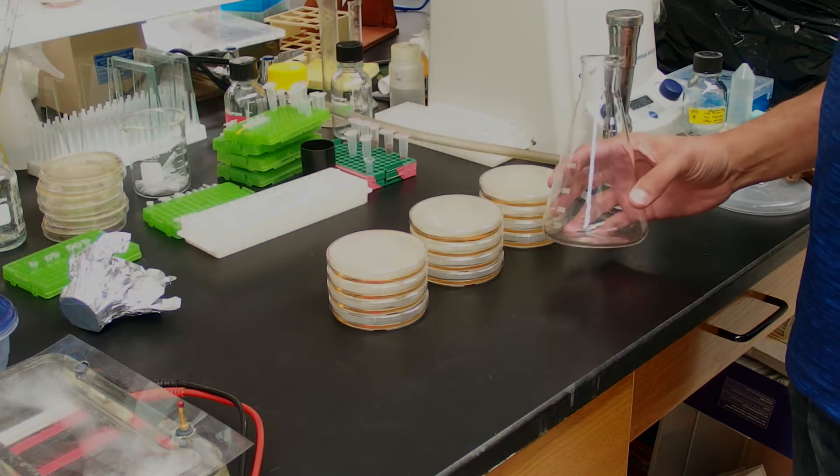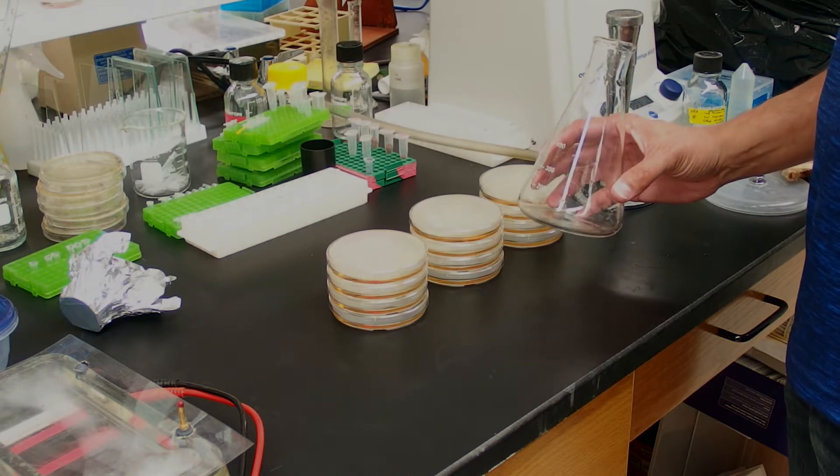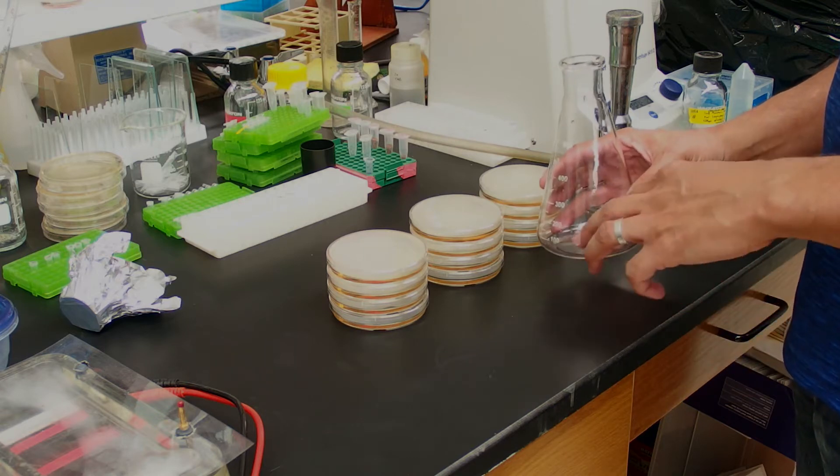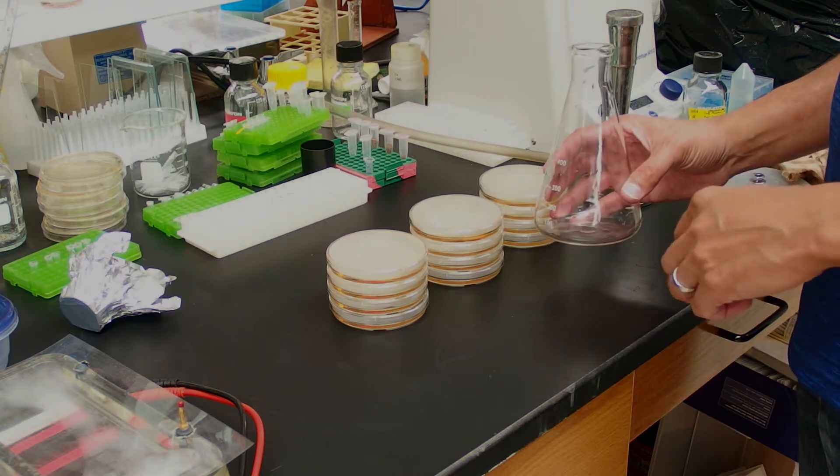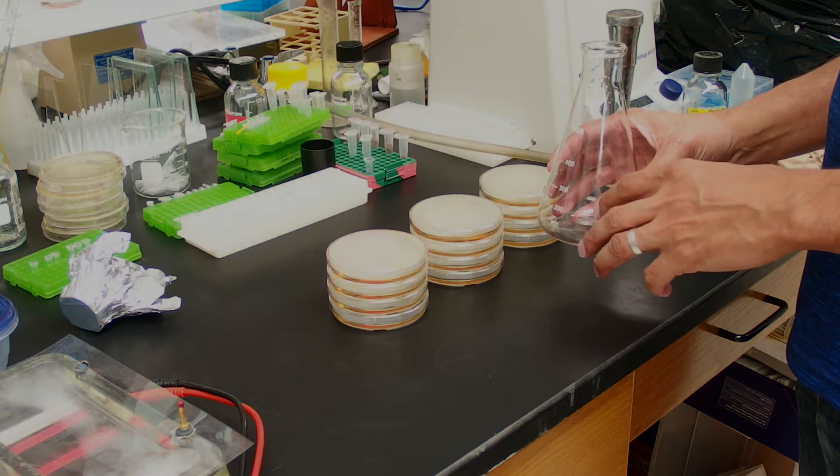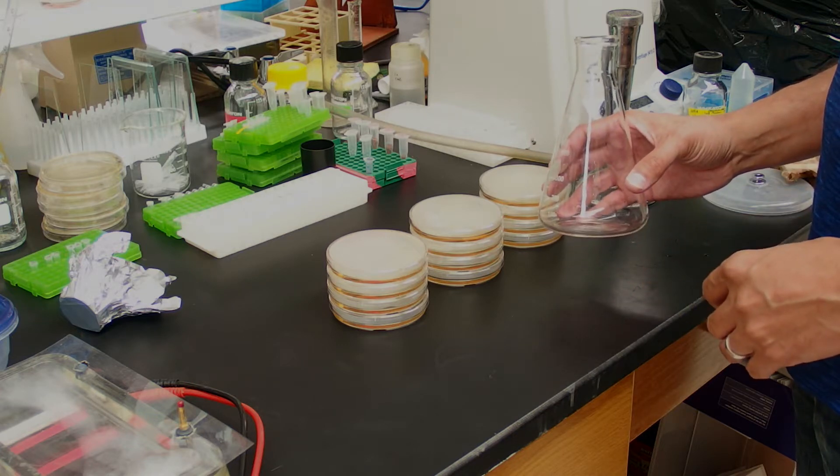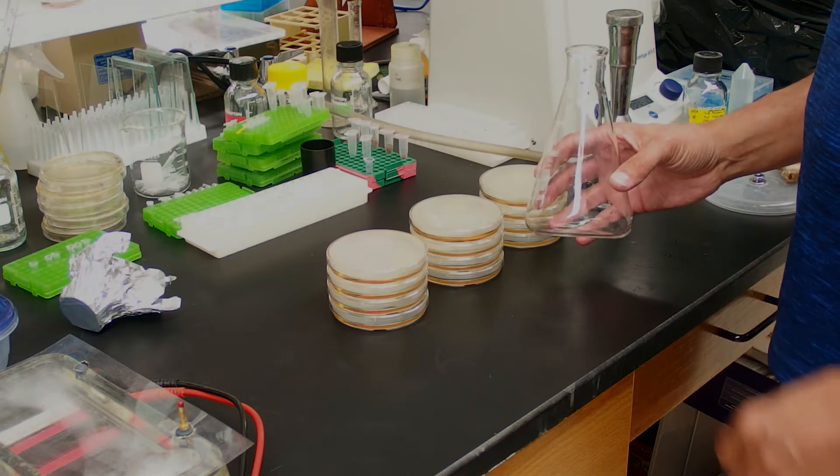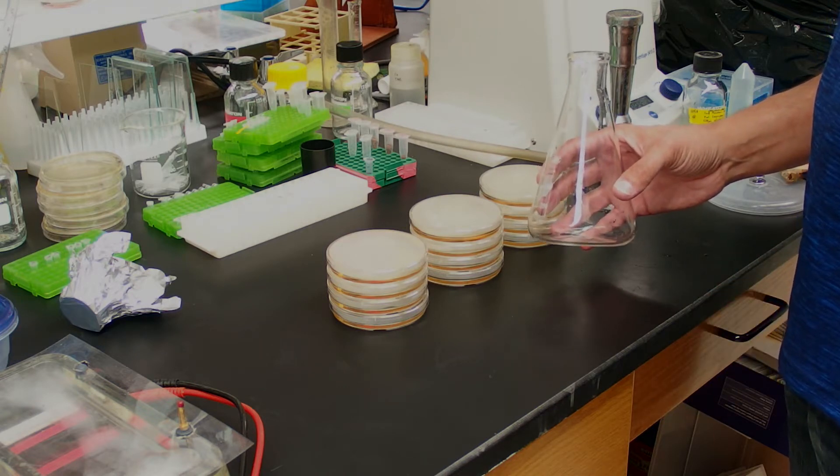One thing we need to do is we need to clean out our Erlenmeyer flask right away after we pour our plates. We don't want agar to gel too hard inside of here. Once the agar is gelled and dry, it can be hard to clean out this flask. So the best thing to do is to immediately rinse this thing out with some hot water and the cleaning will be easy.